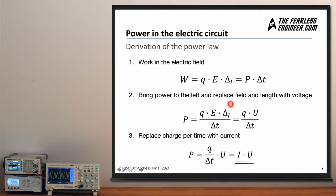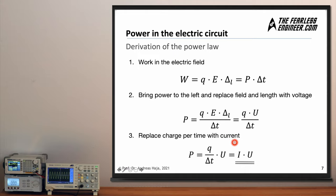So this product of electric field and length can be replaced by voltage. Looking closely, we now have power and voltage in place. What's missing to arrive at the power law is the current. We have charge divided by time, and this ratio — charge per time — is exactly the definition of current. So if we replace charge per time with current I, we automatically arrive at the power law: P = I × V. That's exactly where we wanted to go.